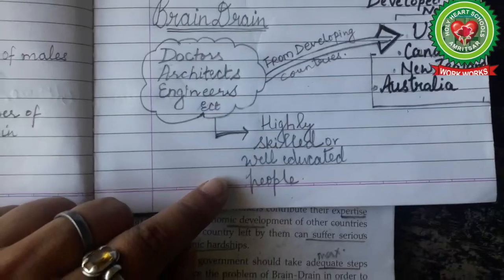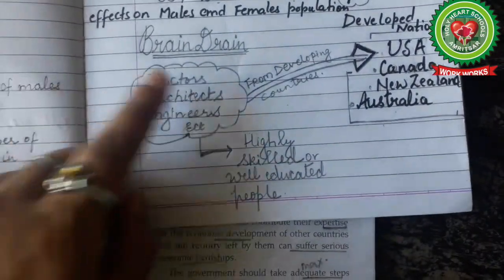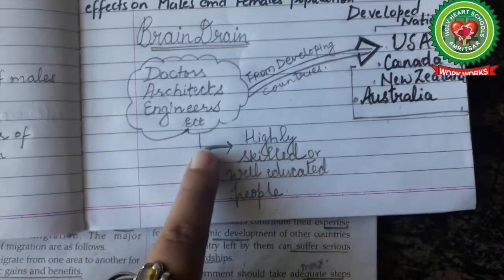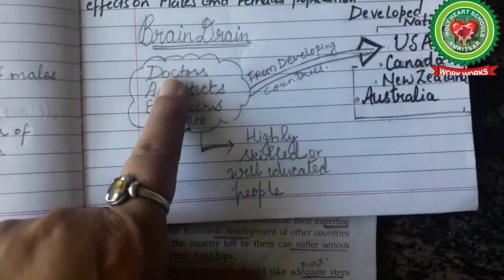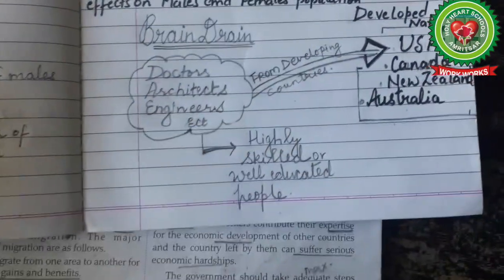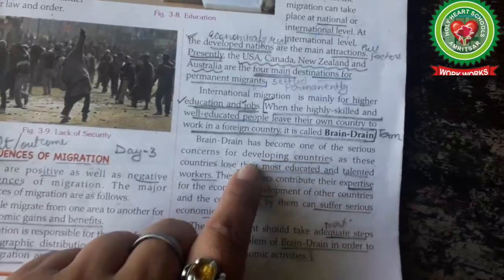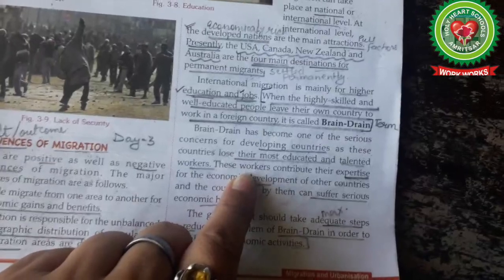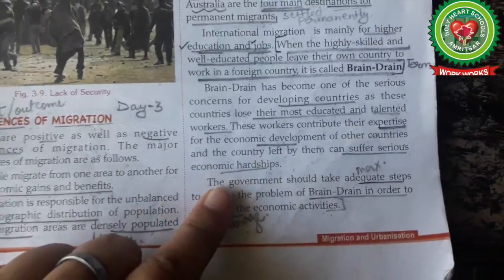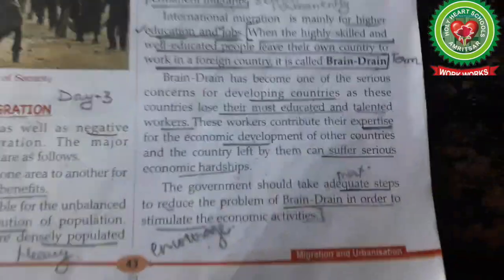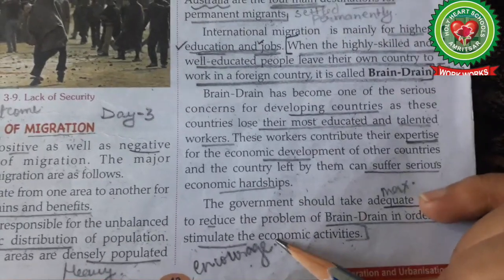Brain drain involves highly skilled or well-educated people such as doctors, architects, and engineers who move from developing countries to developed nations like the USA, Canada, New Zealand, and Australia for better jobs. Brain drain is a boon — meaning a blessing — for developed nations, because highly skilled and educated people settle there. But it is a bane — meaning a curse — for developing countries, because those countries are left without highly skilled or educated people. Brain drain has become one of the serious concerns for developing countries as they lose their most educated and talented workers. These workers contribute their expertise — meaning skilled knowledge — to the economic development of other countries, and the country left by them can suffer serious economic hardship. The government should take adequate steps to reduce the problem of brain drain in order to stimulate — meaning encourage — economic activities.